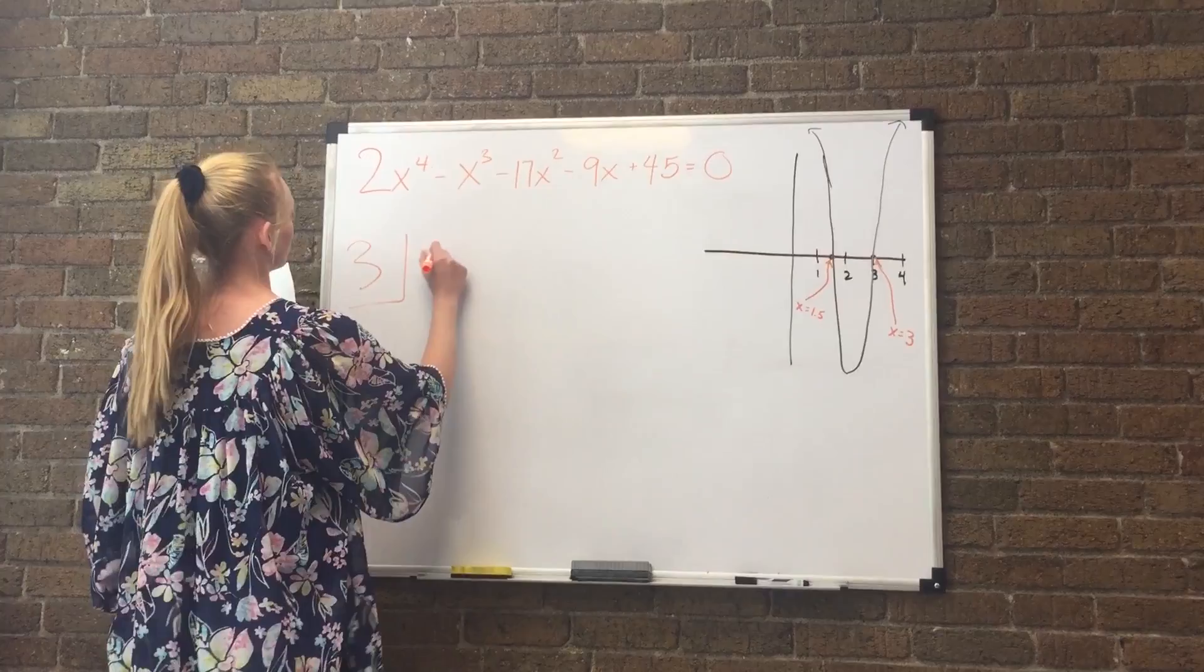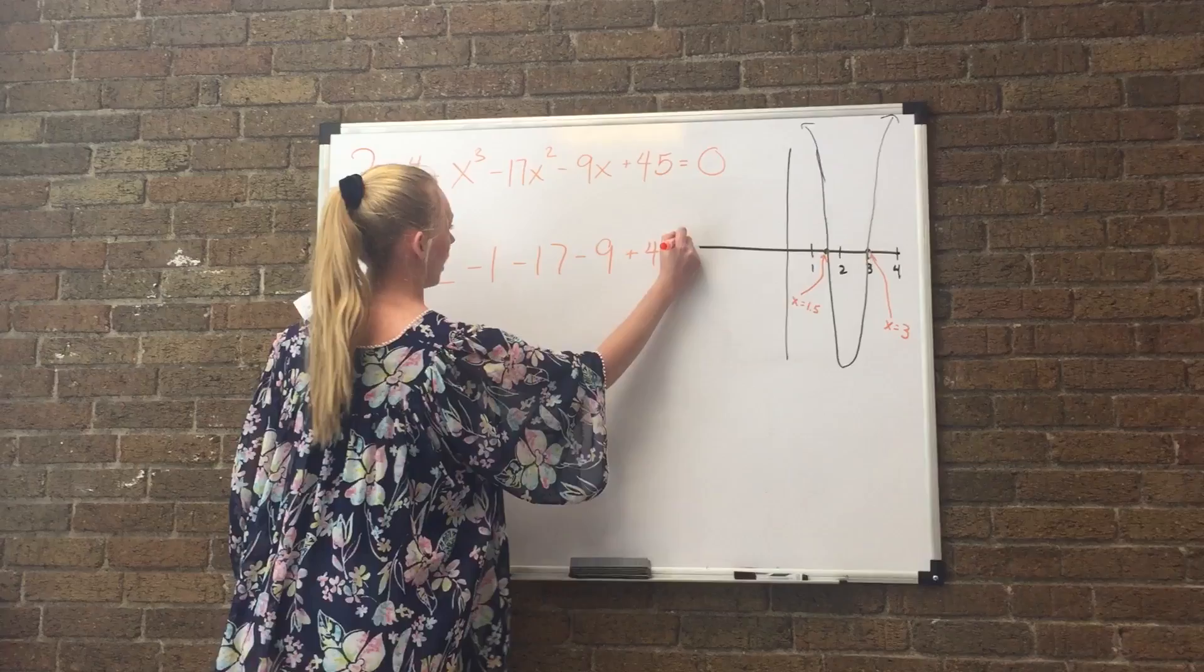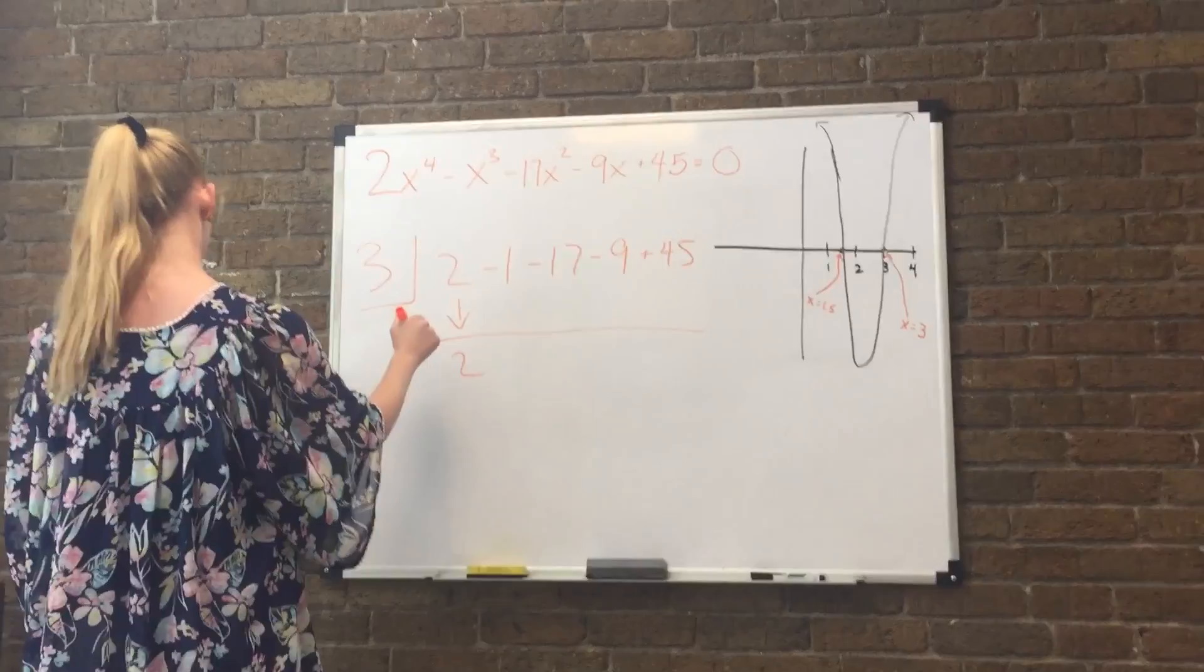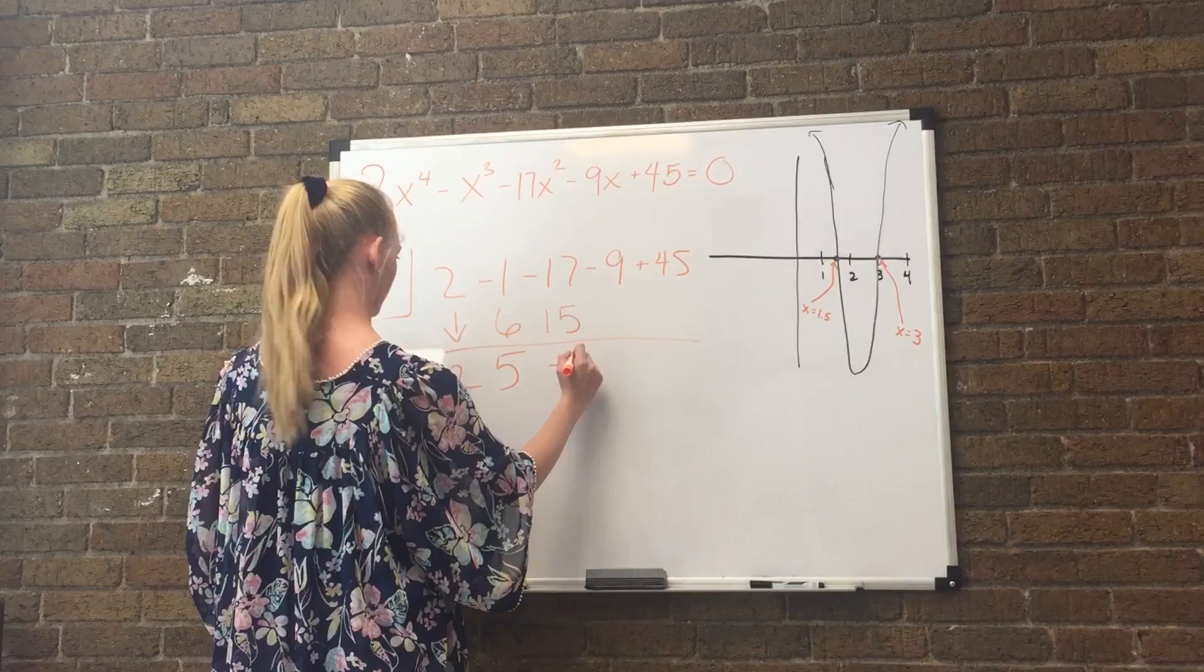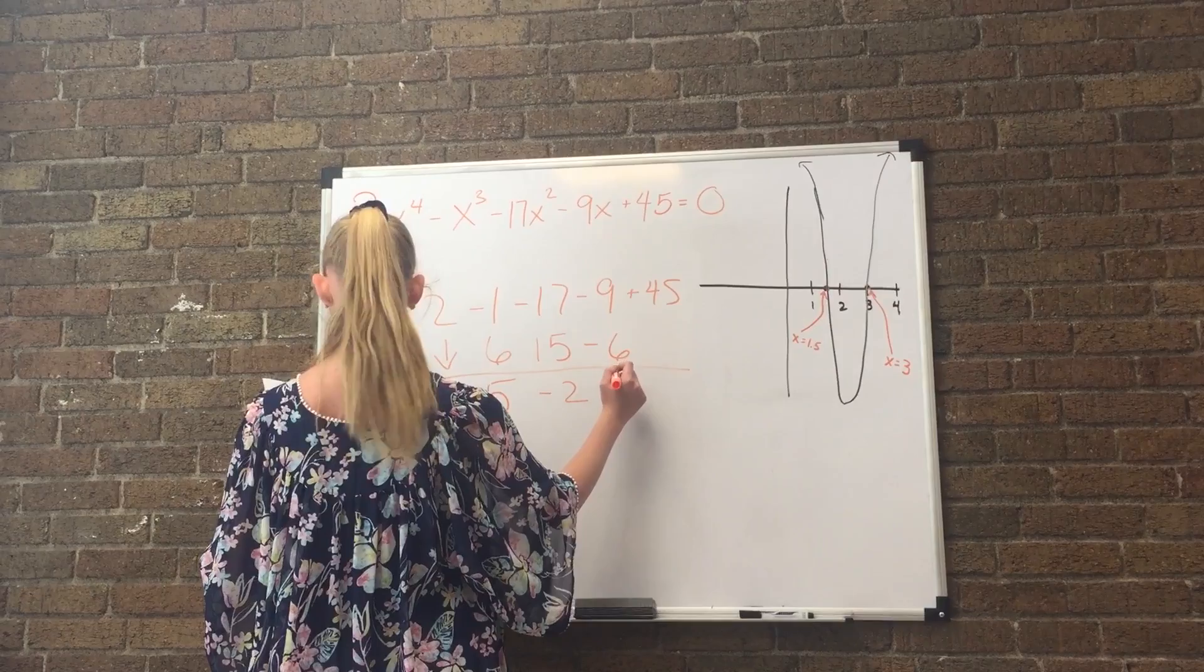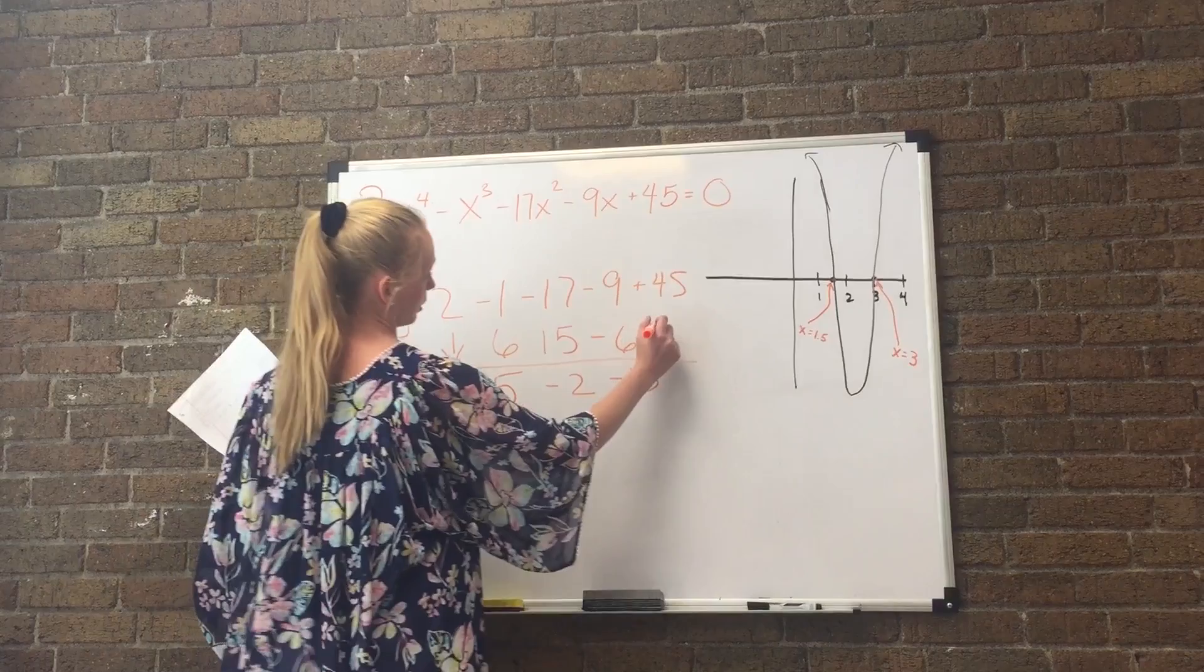2, 1, 17, 9, and 45. And you bring down the 2 and you multiply 3 and 2, which is 6, and then you add or subtract. So here you get 5 and you multiply the 5 with the 3 and you get 15. And this ends up being negative 2. And negative 2 times 3 is negative 6, which is negative 15. And negative 15 times 3 is 45. Negative 45.